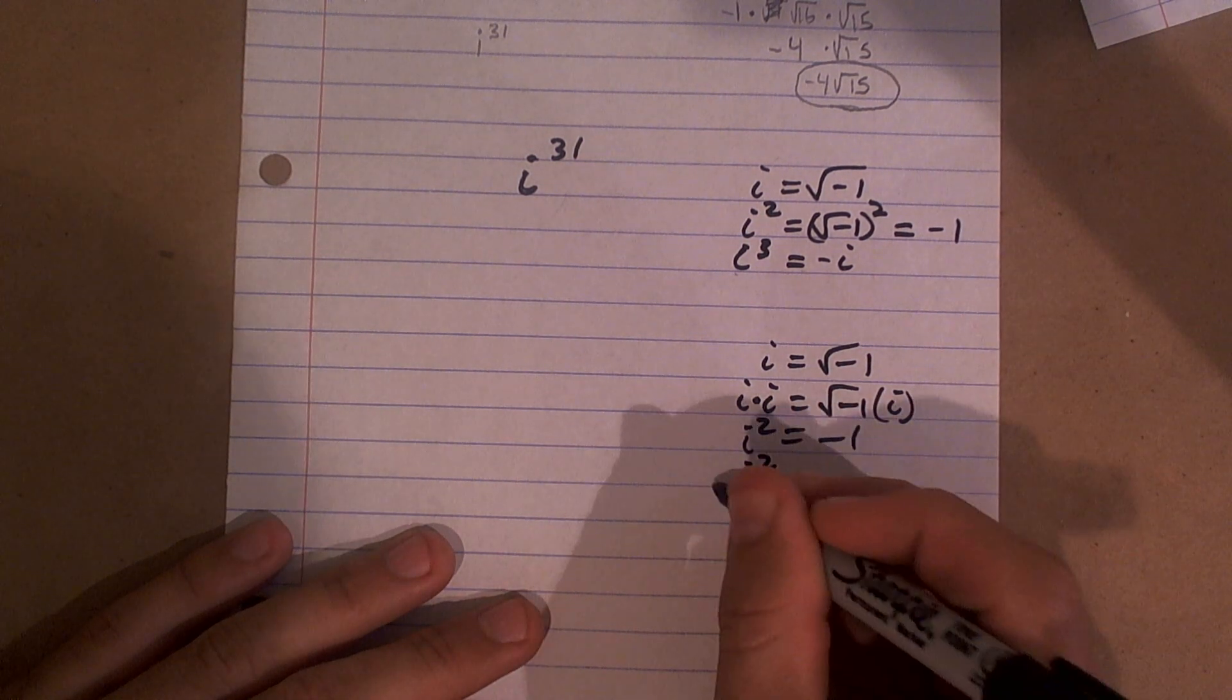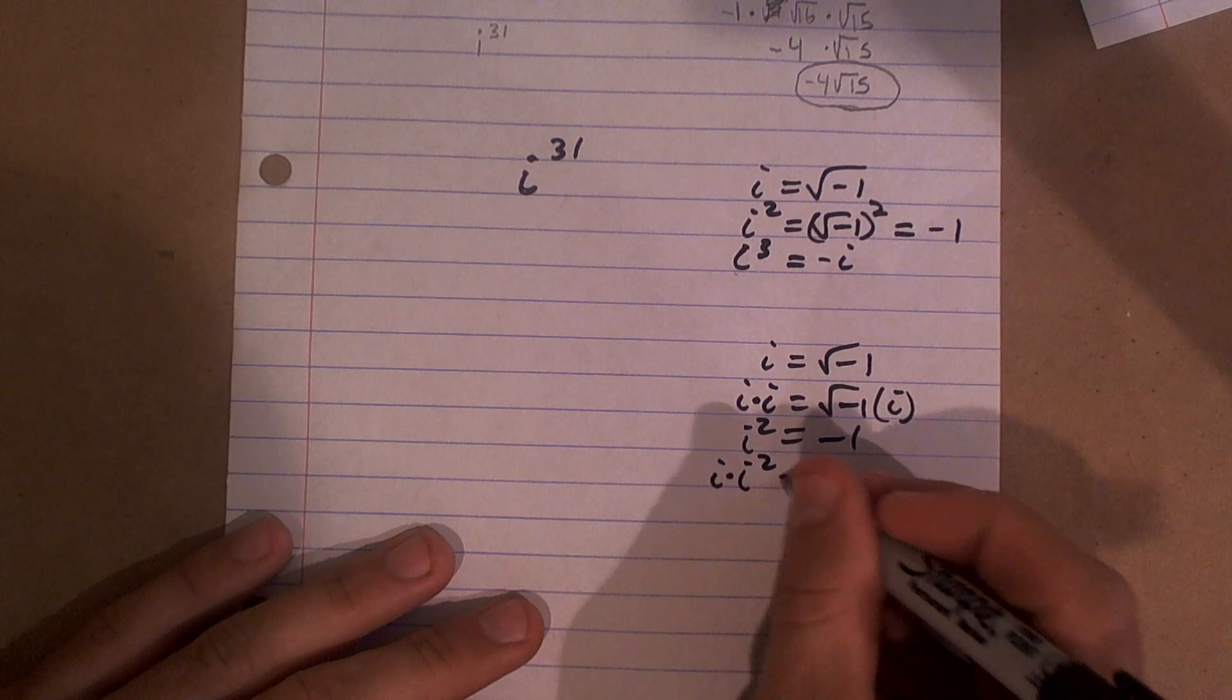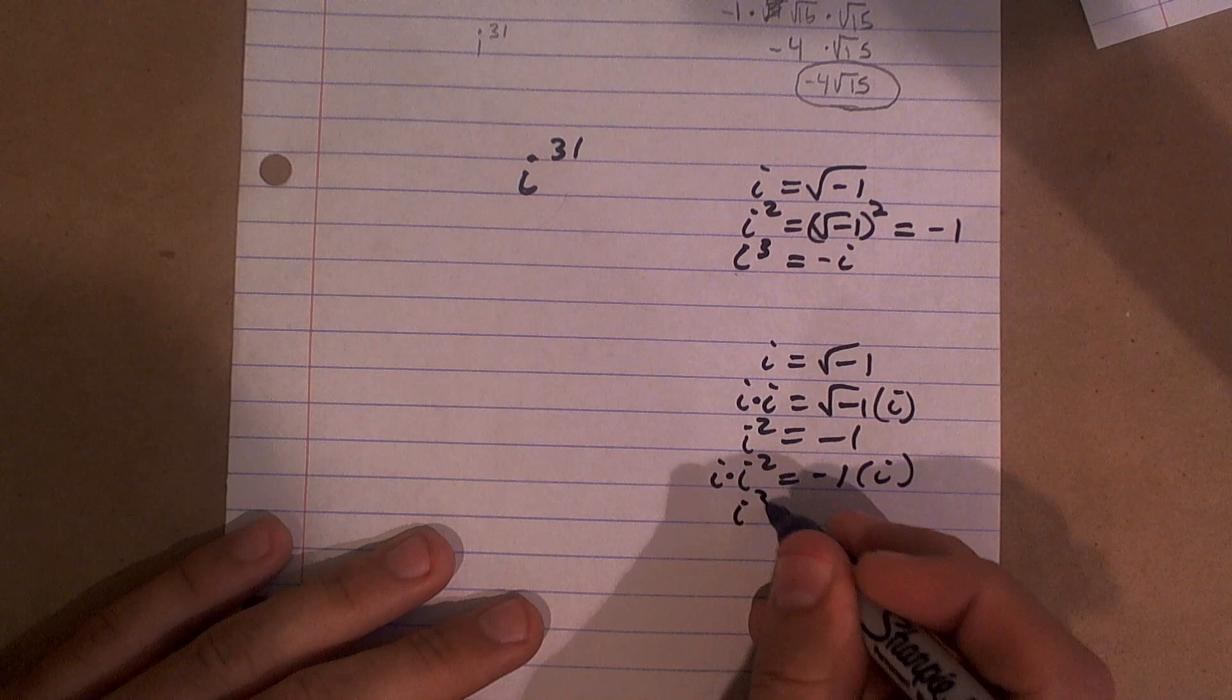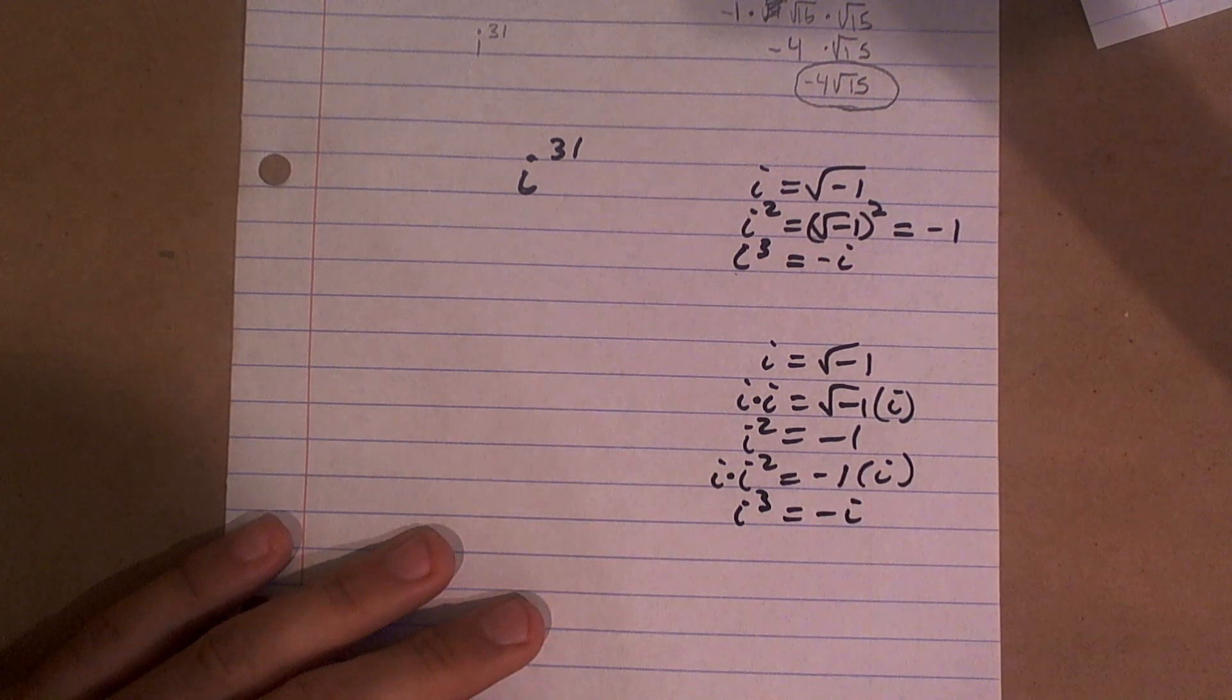Well, let's say we, let's do it again. Let's multiply by i on this side. Let's multiply by i again. Now I get i cubed equals negative i.